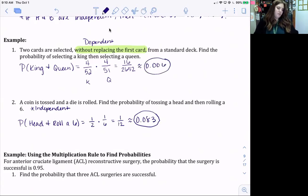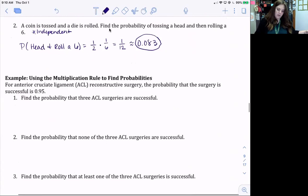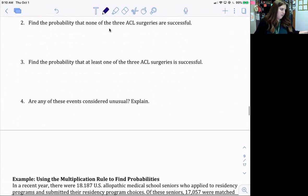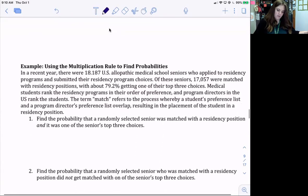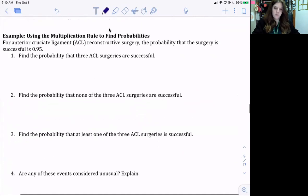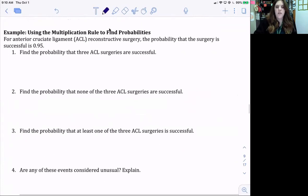Okay, so our next example, using the multiplication rule to find probabilities, we're going to talk about that one in class together. And then same thing for this last example, using the multiplication rule to find probabilities, just because I want to really make sure that we understand it. But go ahead and try at least this first one, and let's see if we can figure it out.